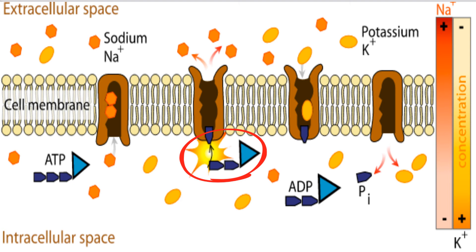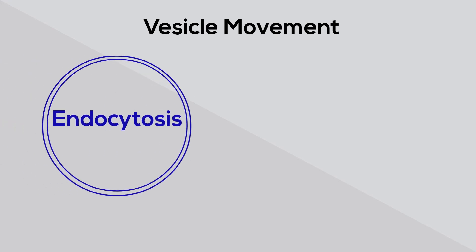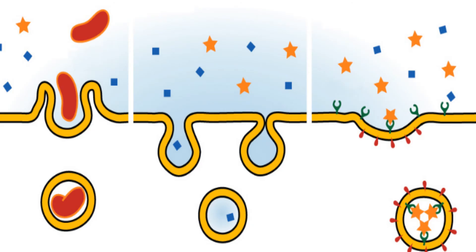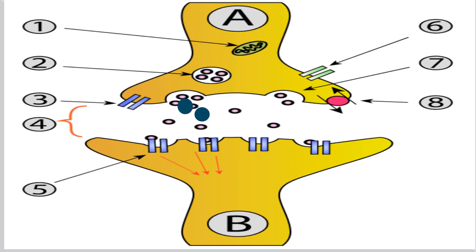The cell also uses two types of vesicle movement called endocytosis and exocytosis. Endocytosis allows the cell to move larger objects into the cell by engulfing the object and moving it into the cell. During exocytosis, the cell expels an object out of the cell. For example, this neuron is using a vesicle to expel the neurotransmitters that are enclosed in a vesicle.